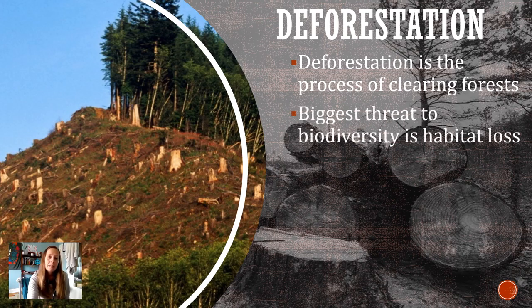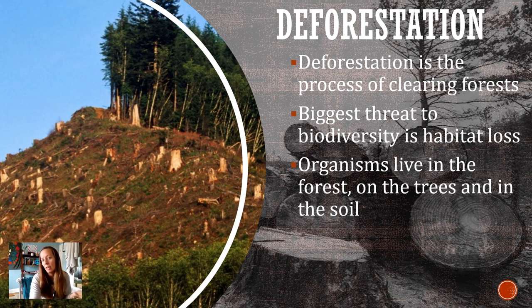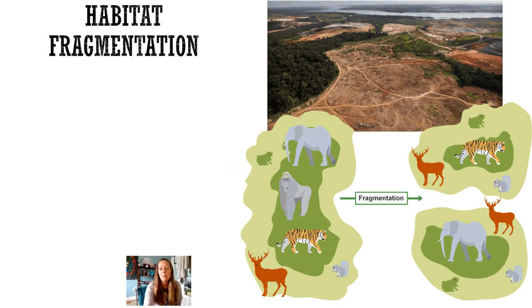Deforestation is the process of clearing the forest. Here's a picture on the left of what forests used to be but are no longer there. What happens is it takes away the habitat — and it's not just the habitat of the trees, but think of all the organisms that live on the tree, in the tree, in the bark, and in the soil. When you take away the tree, you remove all those places and nutrients, impacting that whole area and decreasing the number of species that live there.